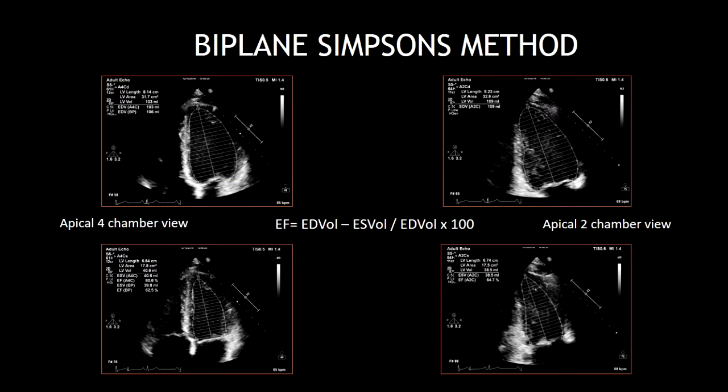If you calculate the diastolic and systolic volume just from the apical four-chamber view, you will get an estimated ejection fraction using just the monoplane or single-plane Simpson's method. In the biplane Simpson's method, volume is based on the apical two-chamber view as well. In general, this method is more accurate and should be given preference over the single-plane approach.